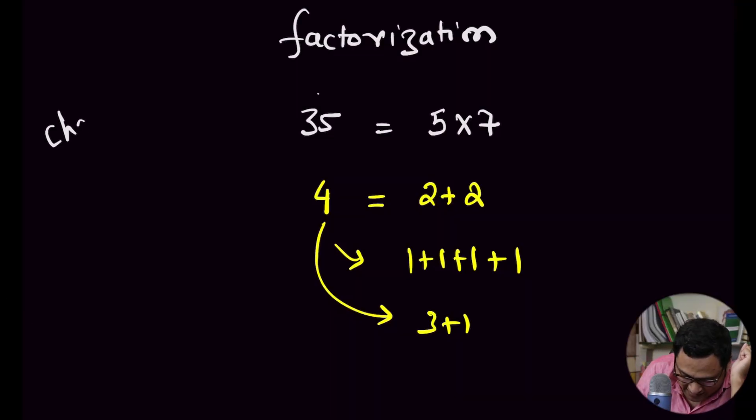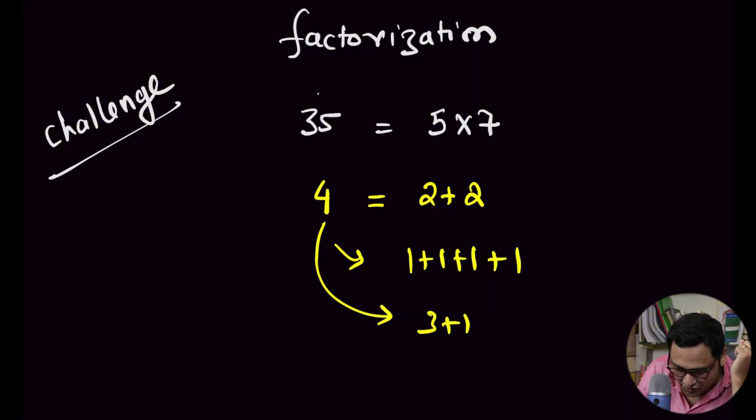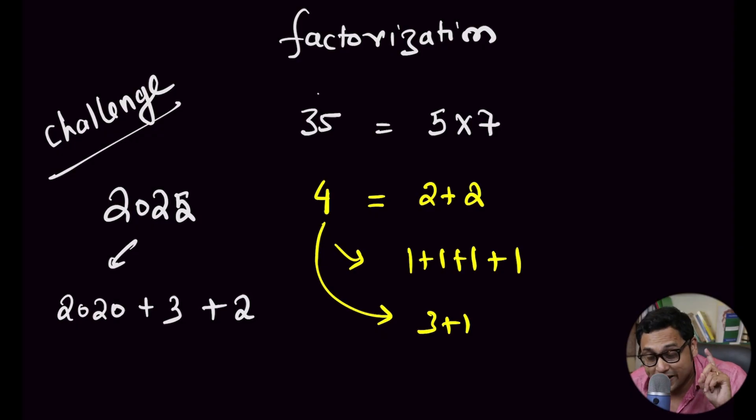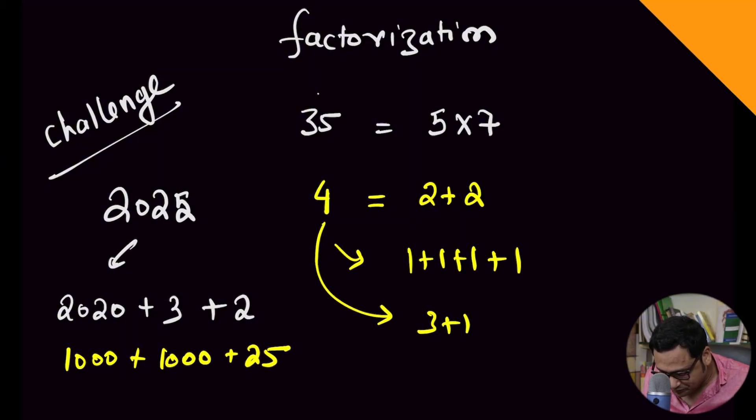In fact, I will give you a challenge. Suppose you have the number 2025 and I want to additively factorize it, which basically means I want to partition it into three separate numbers. So one way to do it is 2020 plus 3 plus 2. Another way is 1000 plus 1000 plus 25. There are quite a few ways. Can you figure out in how many ways you can partition 2025 into three parts? If you can, put it in the comment section.